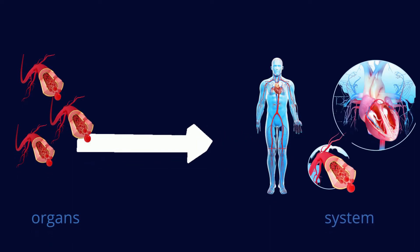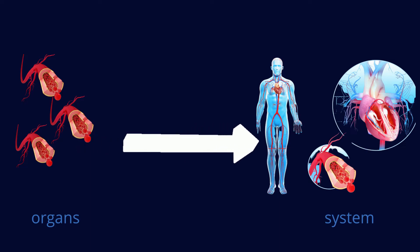Because a system consists of related organs with a common function, such as the cardiovascular system that consists of the heart, blood vessels, and blood. This system has three main functions: transport of nutrients,